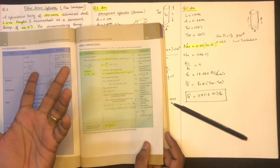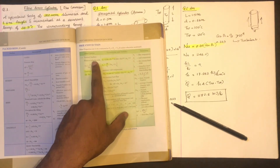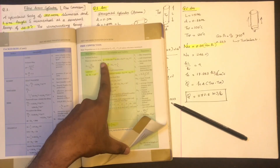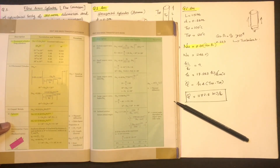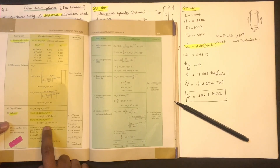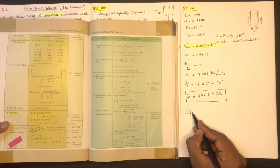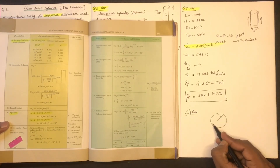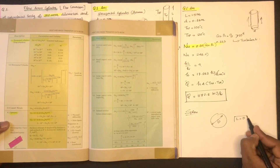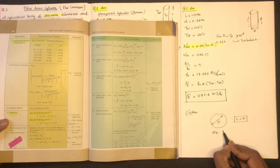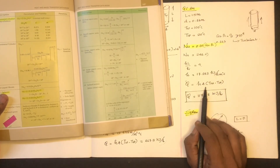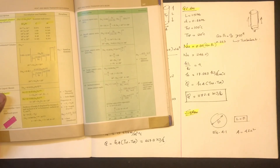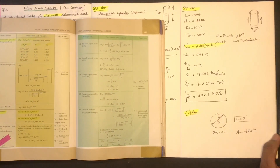We will now consider the vertical surface. For a sphere, L is equal to D, and the rest of the analysis follows the same approach. Using the relation 4.1, we get H, and the area of the sphere is 4 pi r squared, so Q equals H times A times delta T.